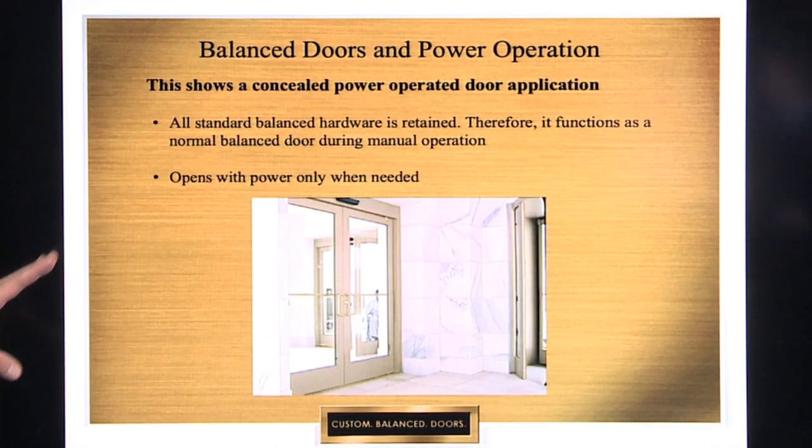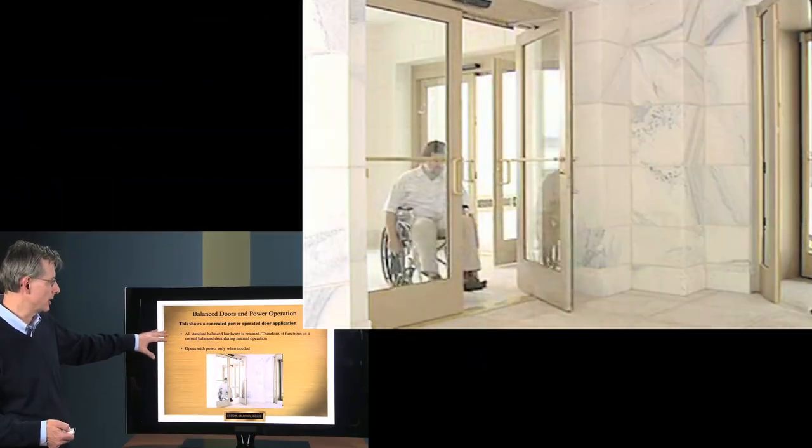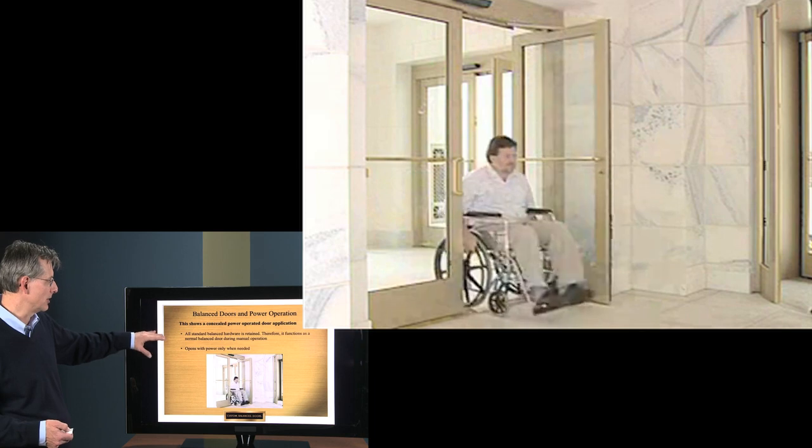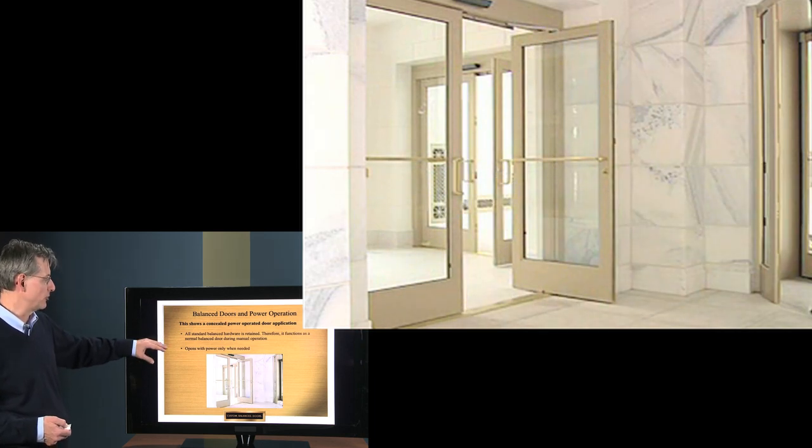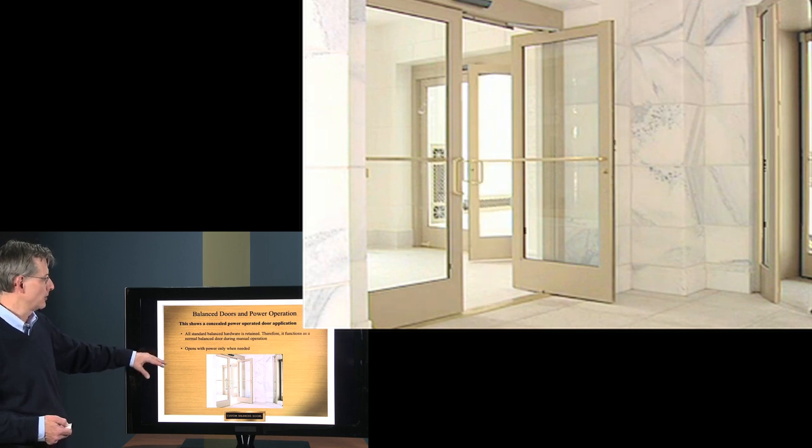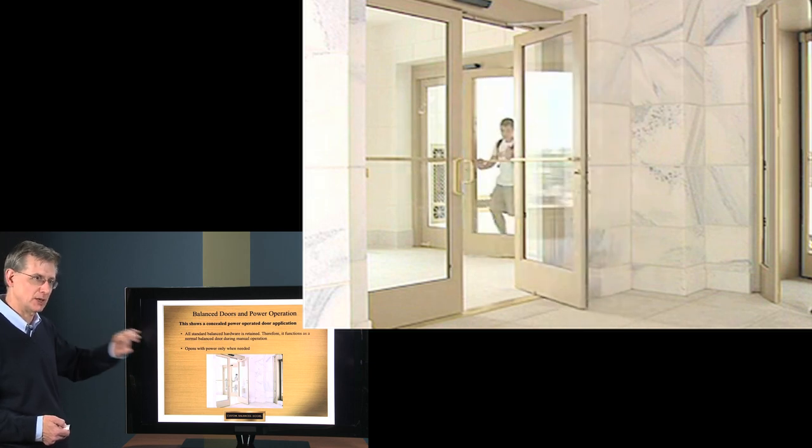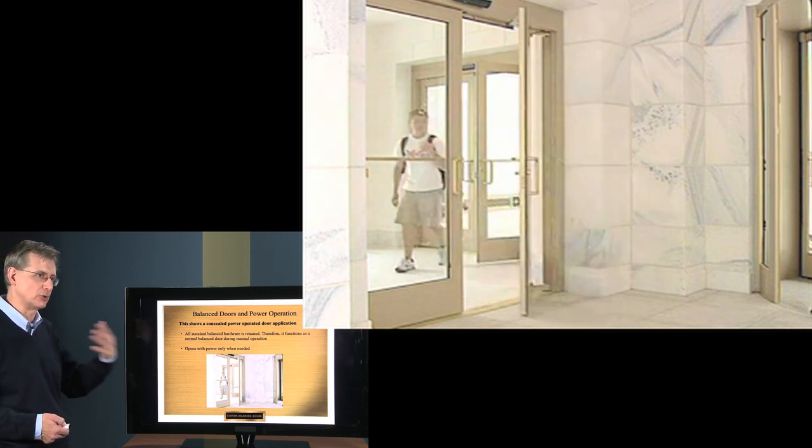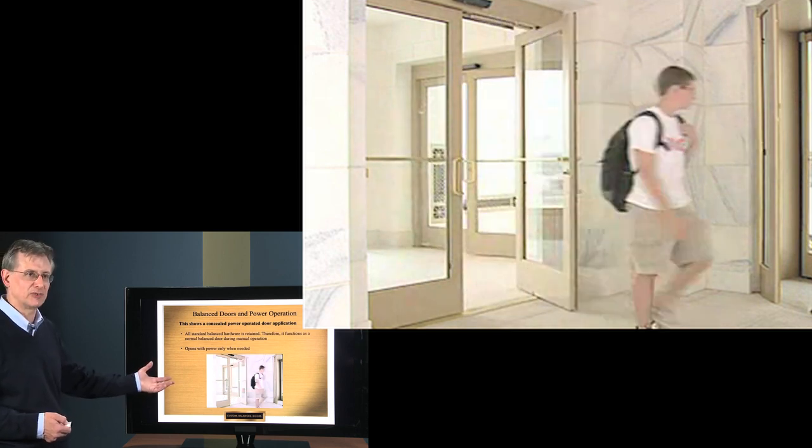This is a video that shows an actual installation on a balanced door. All the standard balanced hardware is retained, and therefore it functions as a normal balanced door manually and is opened only when needed. A low energy type operator is used, so it's used with a knowing act, a push button type where you have to hit a button and then someone knows that the door is going to come open. So therefore this would comply with ANSI 156.19.